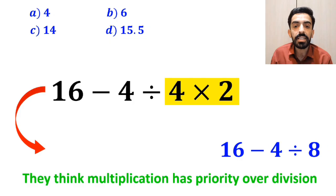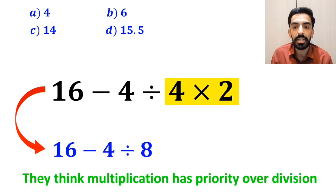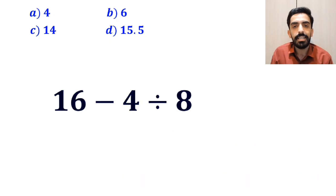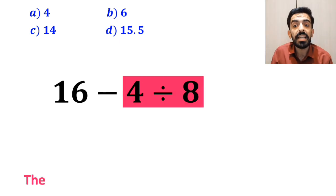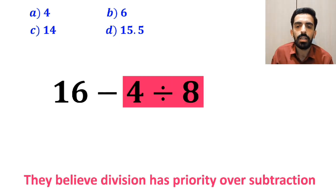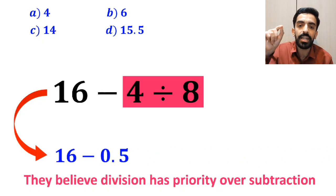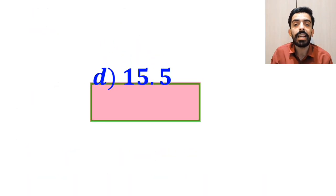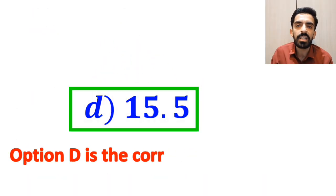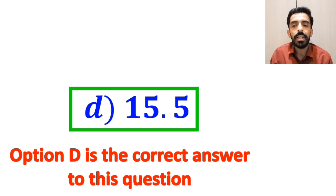So, they rewrite this expression as 16 minus 4 divided by 8. Next, they perform the division between 4 and 8, since they believe division has priority over subtraction. And they rewrite this expression as 16 minus 0.5, which ultimately gives them the answer 15.5. And immediately, they conclude that option D is the correct answer to this question. However, this answer is absolutely wrong.